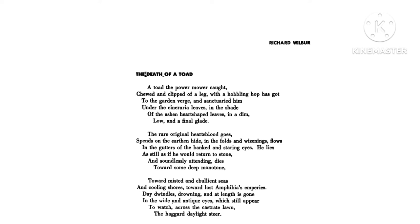'Toward misted and ebullient seas and cooling shores, towards lost amphibious empires' — when the toad is gone, the amphibious empires associated with it will also slowly be lost. 'Day dwindles, drowning' — 'dwindles' means something is decreasing. The day is ending, the length of life is ending, and darkness is coming for the toad — this tells us of its approaching death.